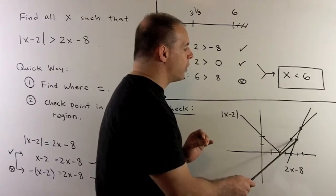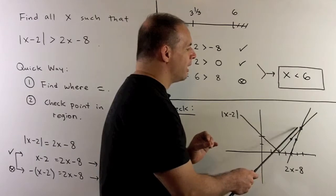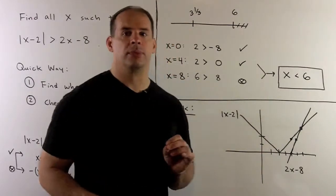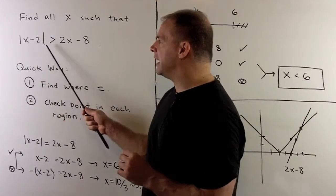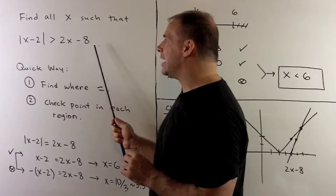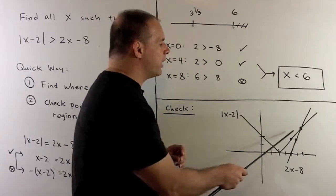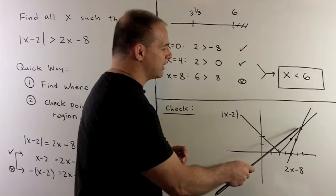I just go up 2 over 1, up 2 over 1, and they're going to intersect at x equal to 6. All we're asking here is, when is the graph of the v above the graph of the line? That's going to be whenever x is strictly less than 6.